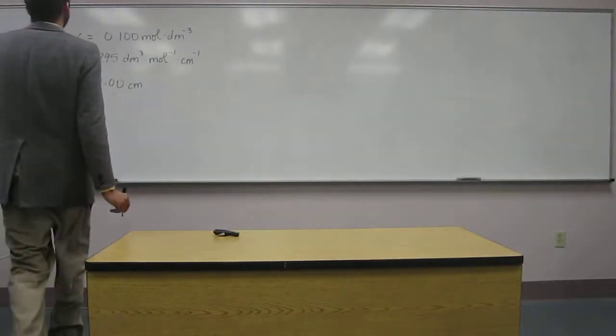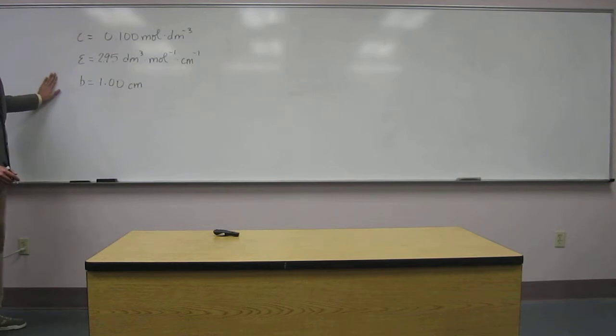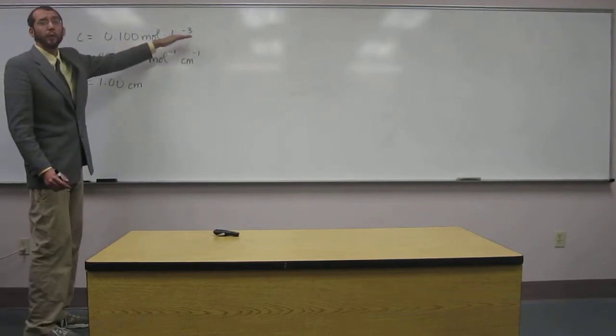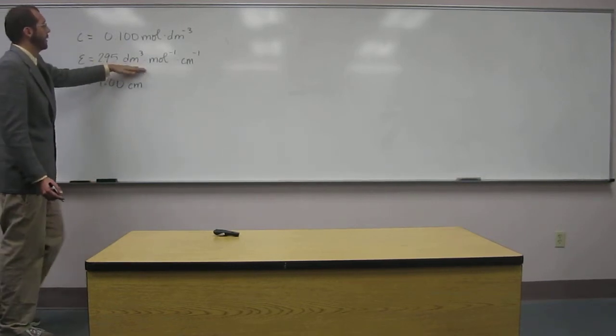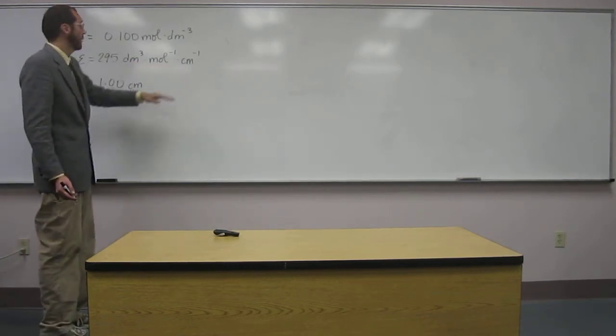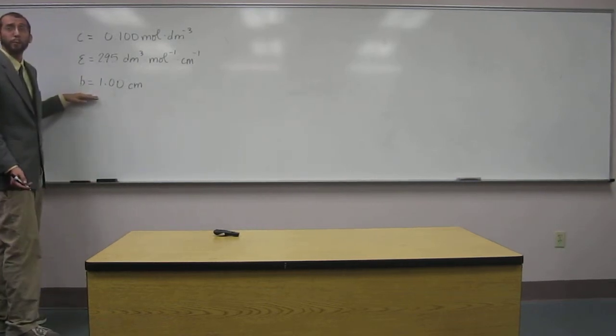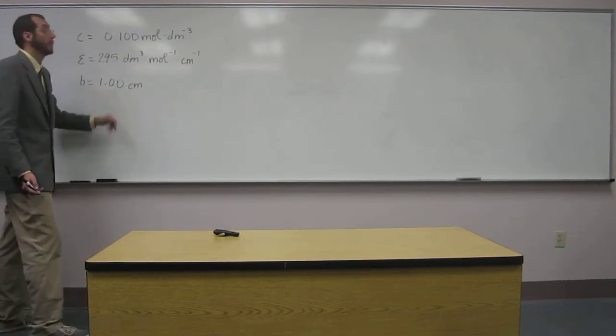So hopefully you see we've got all of this stuff written up here: concentration value, moles per decimeter cubed; molar absorptivity, 2.95 decimeter cubed per mole per centimeter; and path length b at 1.00 centimeter.